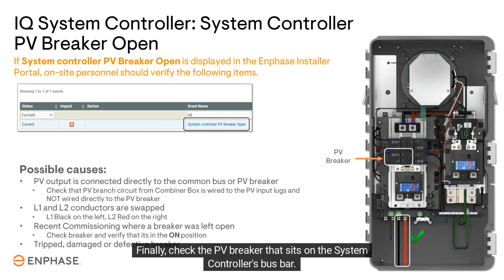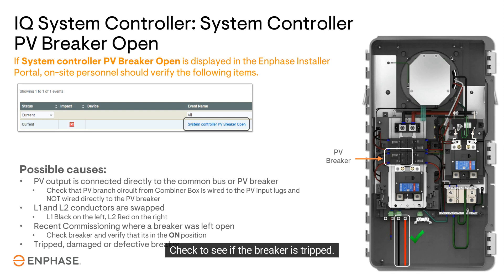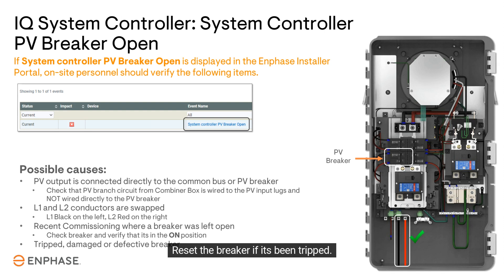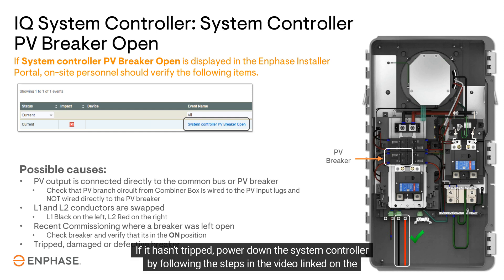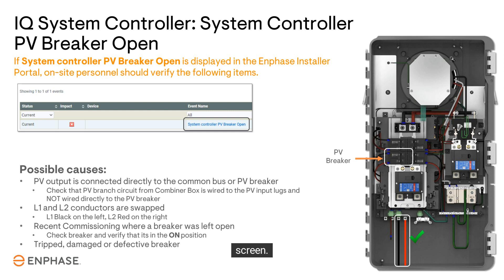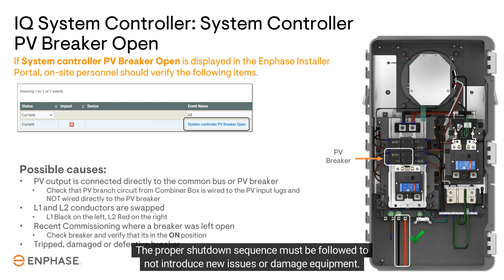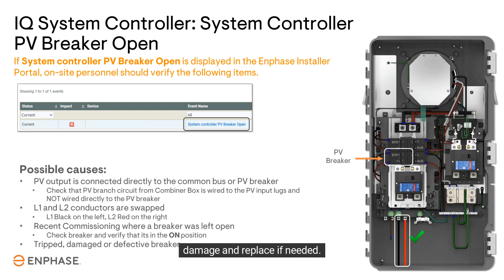Finally, check the PV breaker that sits on the system controller's bus bar. Check to see if the breaker is tripped and reset the breaker if it has been tripped. If it hasn't tripped, power down the system controller by following the steps in the video linked on the screen. The proper shutdown sequence must be followed to not introduce new issues or damage equipment. Once the system controller no longer has power, pull the PV breaker from the bus bar and inspect it for damage and replace if needed.